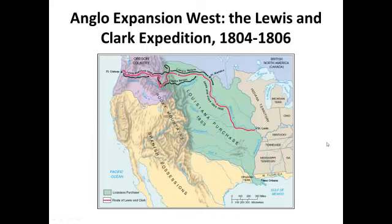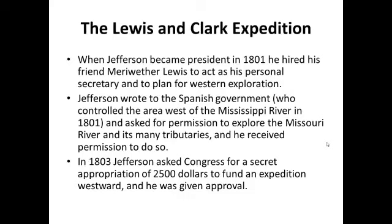We're going to wrap up our week eight discussion of the early 19th century by talking about Anglo-American expansion west and the Lewis and Clark expedition. Many students are familiar with this larger-than-life expedition that occurred between 1804 and 1806, but all too often some of the critical actors in this set of events are forgotten or underemphasized. I'd like to discuss Sacagawea and York, because they played a critical role in the success of Lewis and Clark's journey.